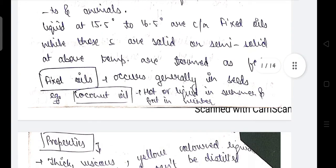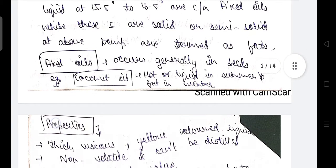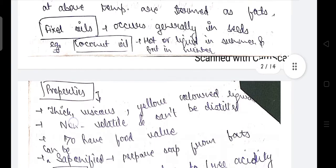Fixed oils occur generally in seeds. For example, coconut oil is hot or liquid in summer and becomes fat in winter. This is a good example — fixed oil is in liquid form in summer and it becomes fat in winter.